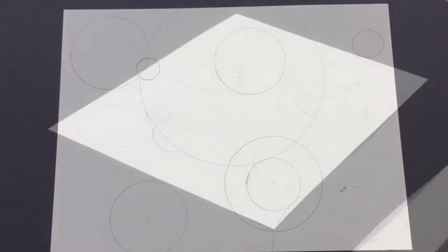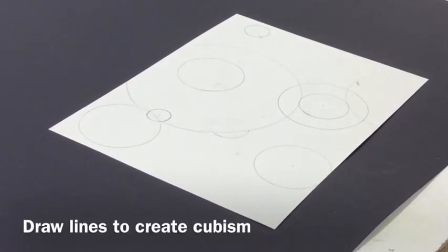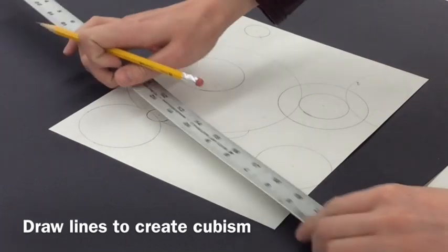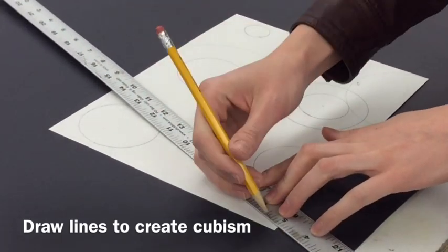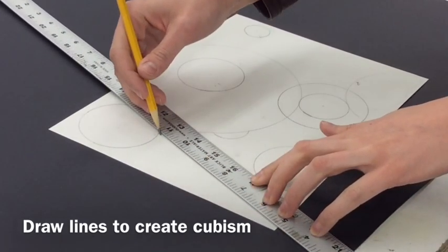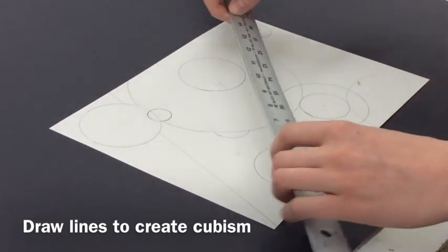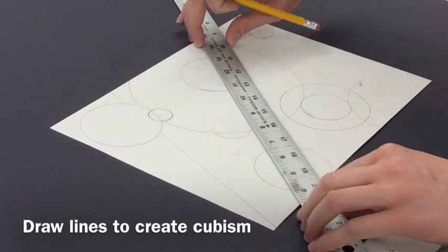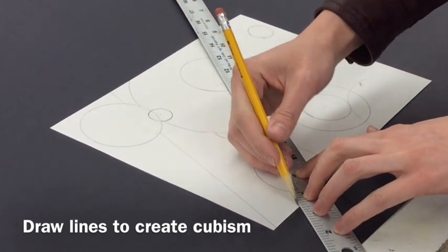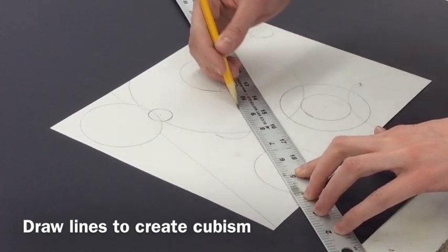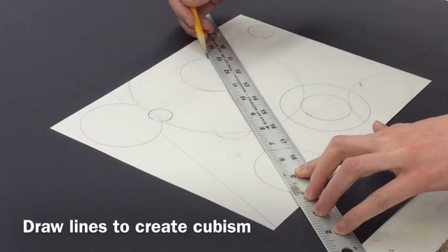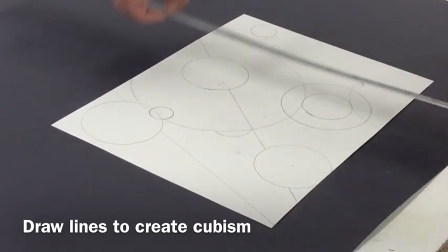So I have all my different circles drawn up. Now I'm going to start really creating the cubism. I'm going to start breaking up the space a little bit. This is going to create some interest when I go to actually color and change my values between my shapes and areas of my drawing. So I'm laying down my ruler, just doing some diagonal lines. Sometimes I go through a circle, sometimes I avoid a circle, and that will create a sense of space.